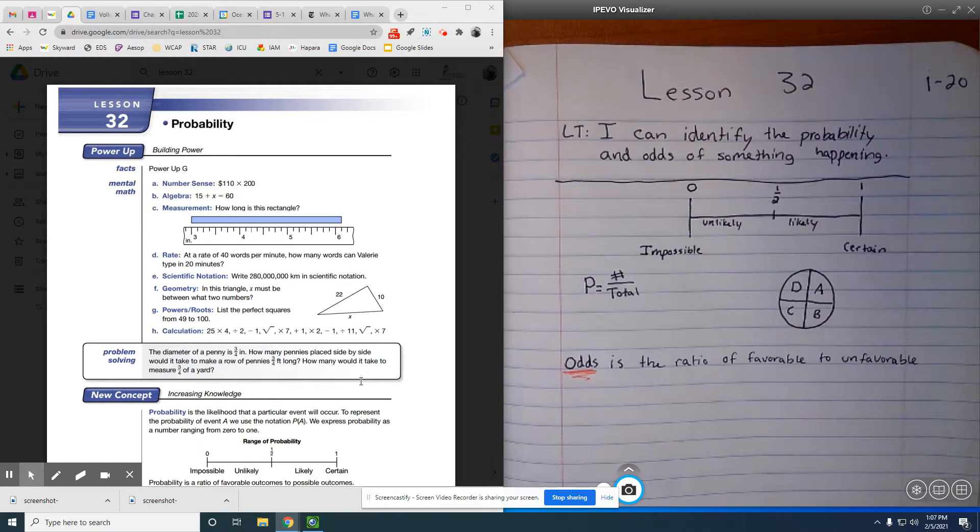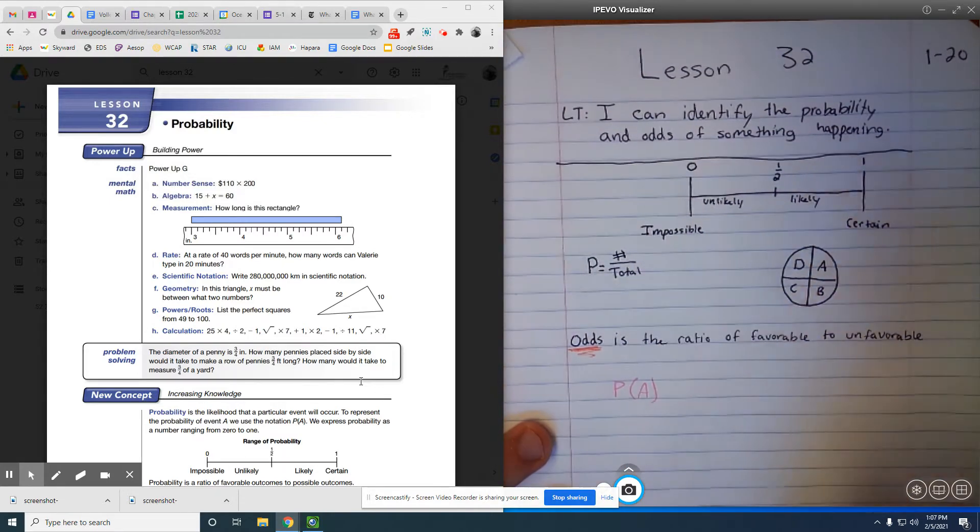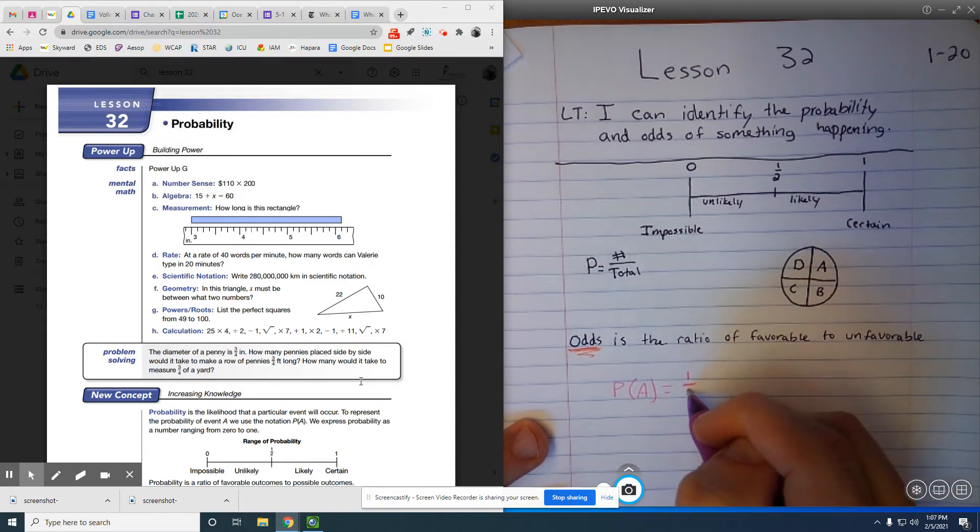To find the probability, we're going to have the number or the thing that we want, and the total is going to be on the bottom. So for example, I've got this spinner right here, and let's say I want to spin it once and I want to know what's the probability of getting A. Well, the probability of getting A, there's only 1 A on there out of 4.